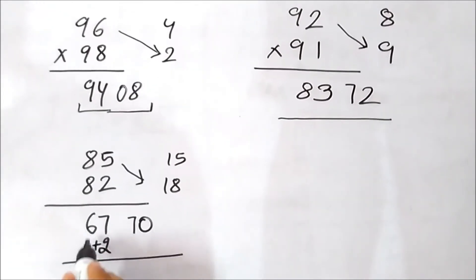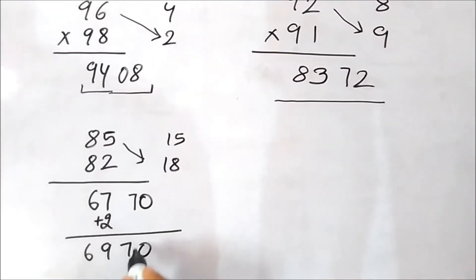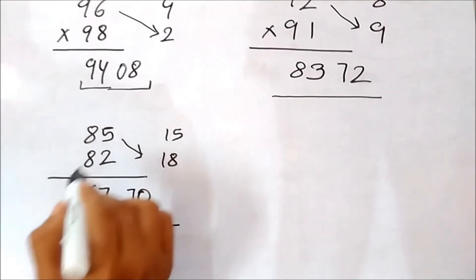So then final answer will be 6, 9, 7, 0. So the answer is 6970 for 85 into 82.